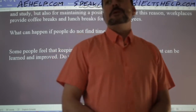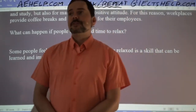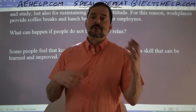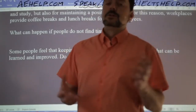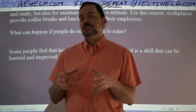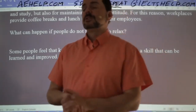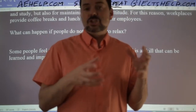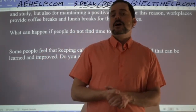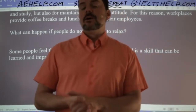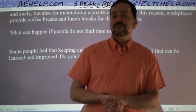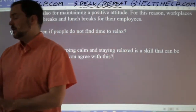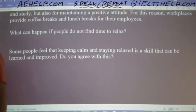Speaking part one is about you on a more general topic, like hobbies or computers. The questions are specifically dealing with your life and experiences. Part three is a more specific topic — here it's relaxation and the importance of relaxing places. It's connected to part two and it's asking about objective opinions, objective truths, or facts based on your knowledge, but not specifically about you. That's the big difference between part one and part three.